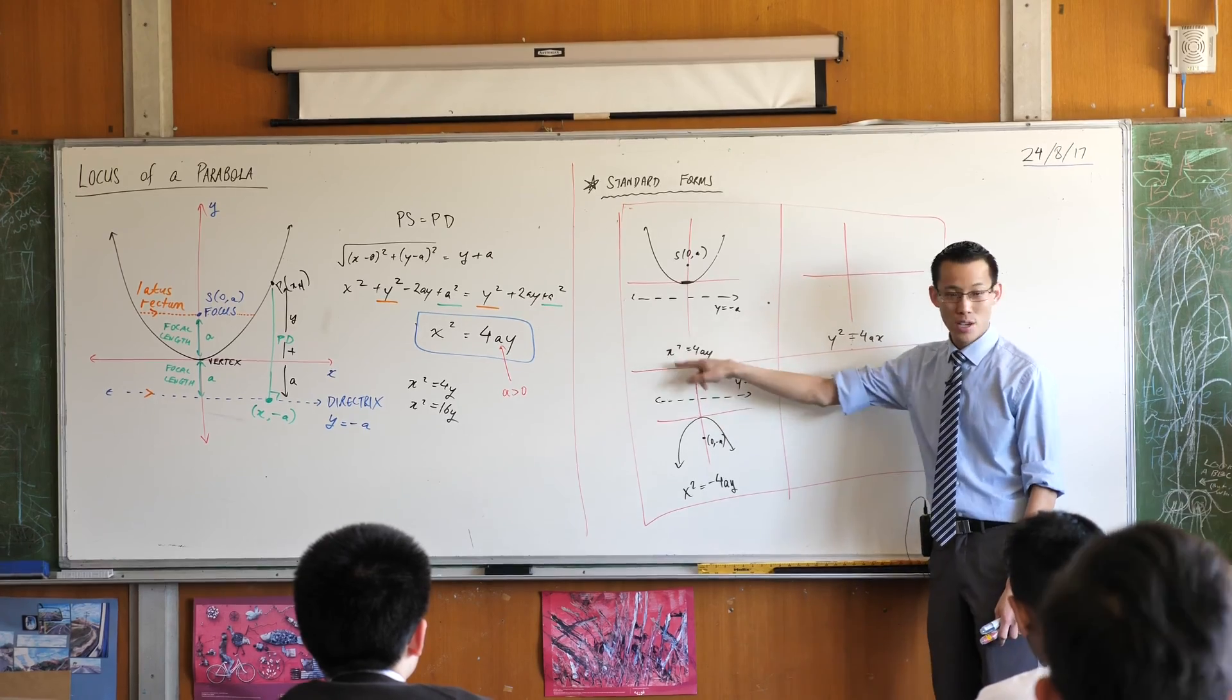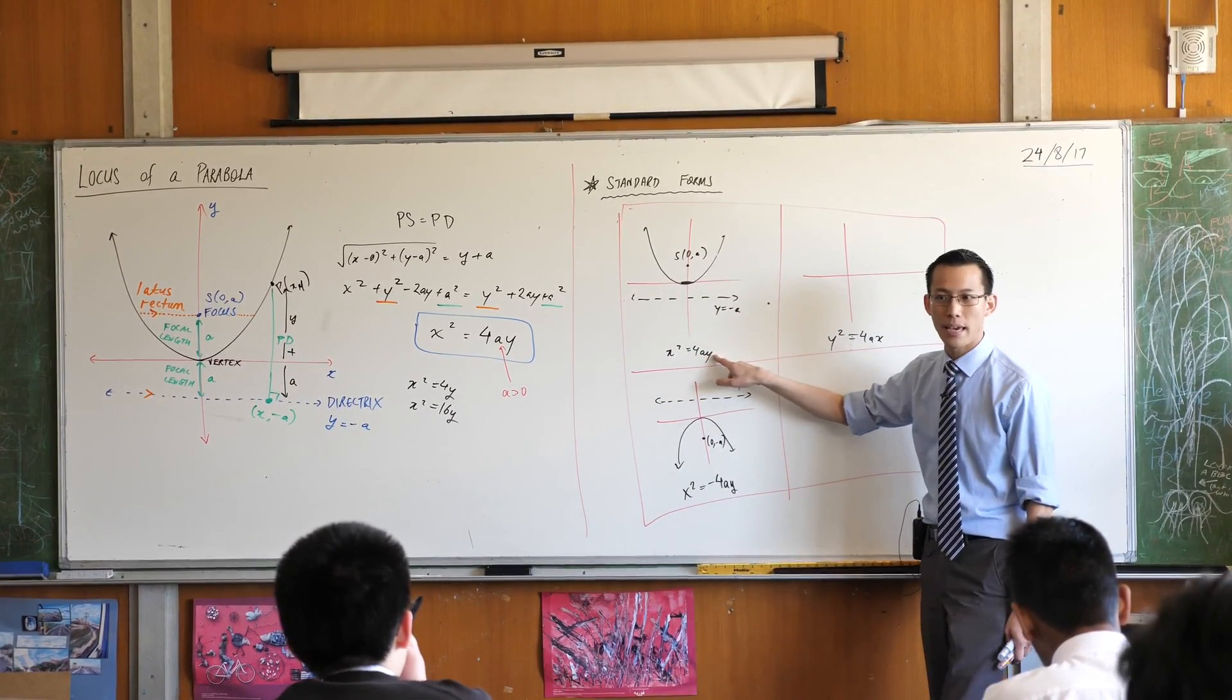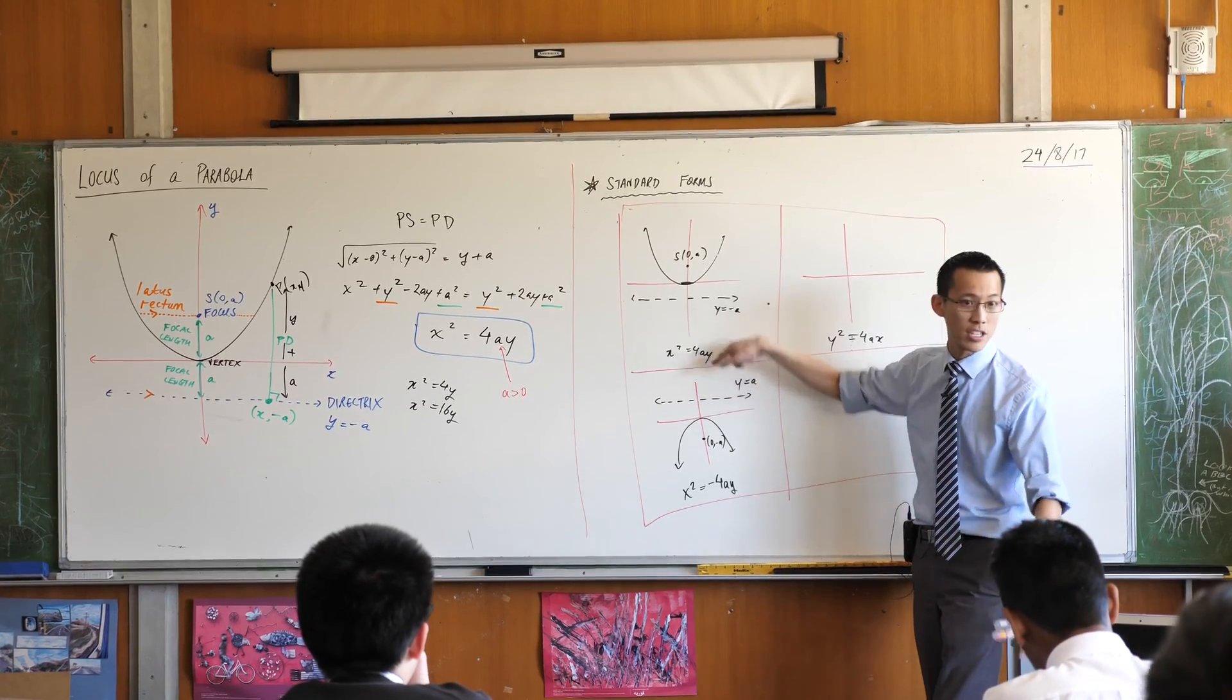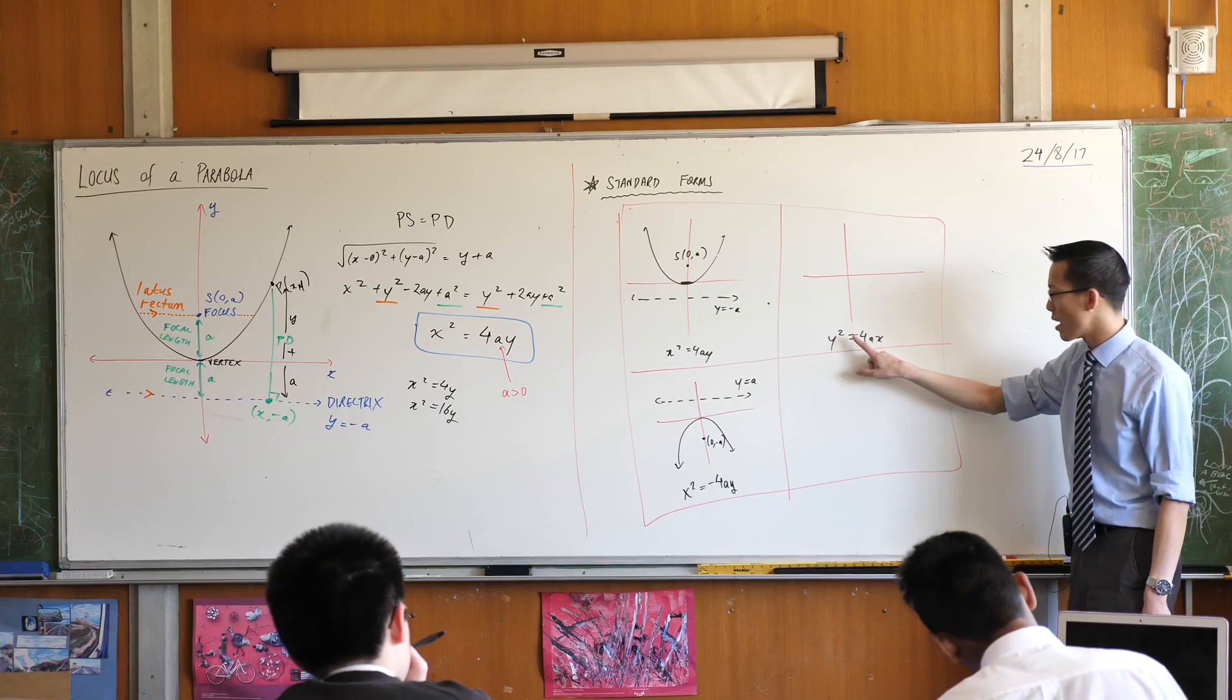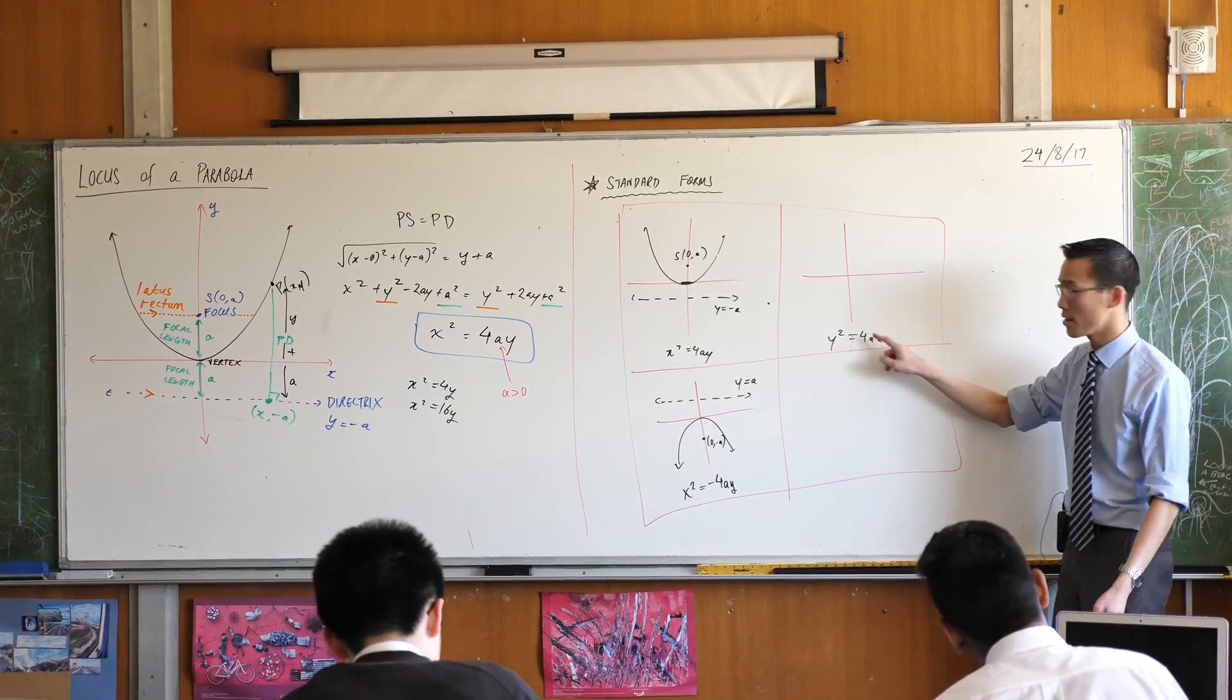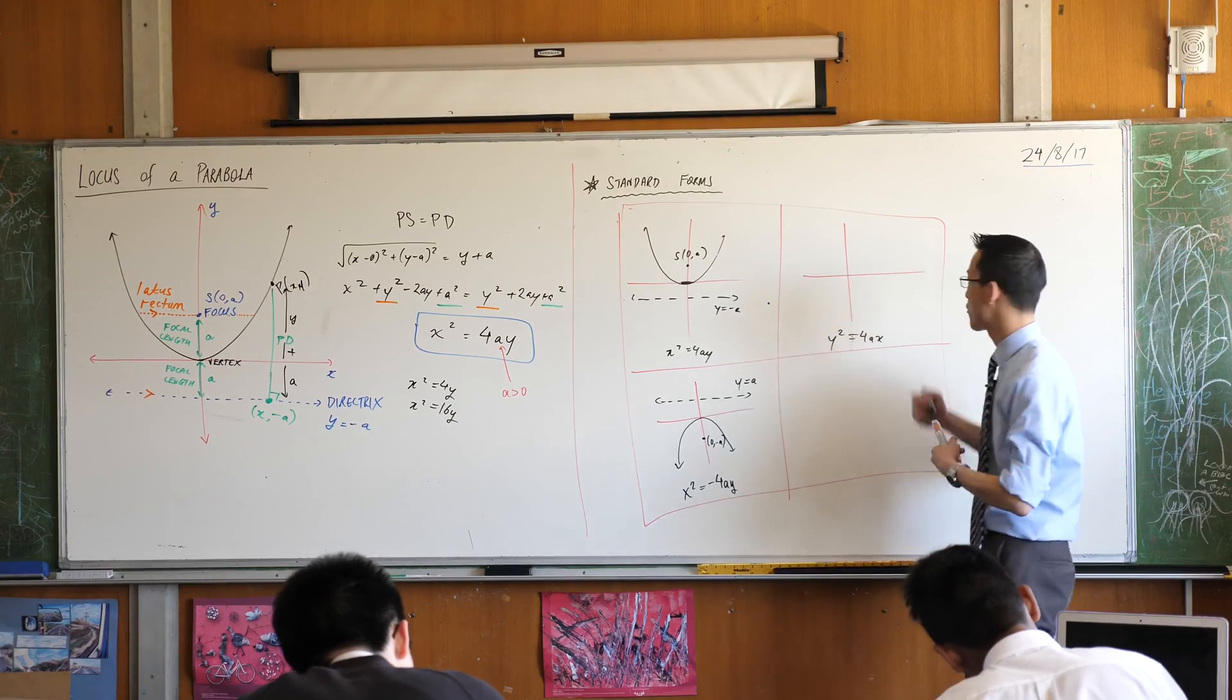So see over here, see over here how on the left hand side you've got a square. So y has to be, the lowest it can be is zero and it's going to go up. Do you agree? So here you've got a square on the left hand side so the smallest x can be is zero and everything else is positive. So I can get my concave right from there.